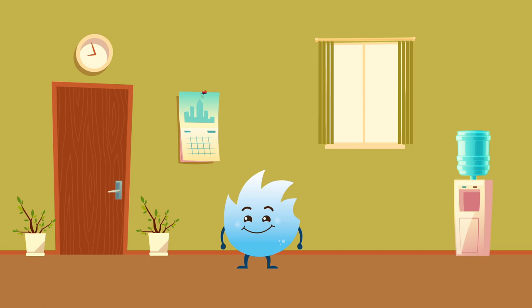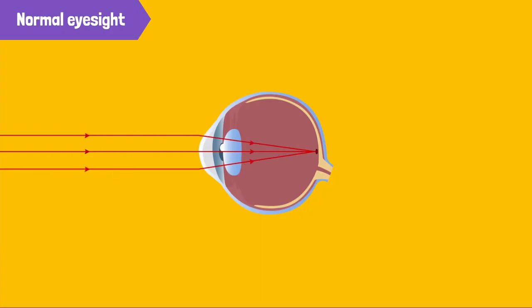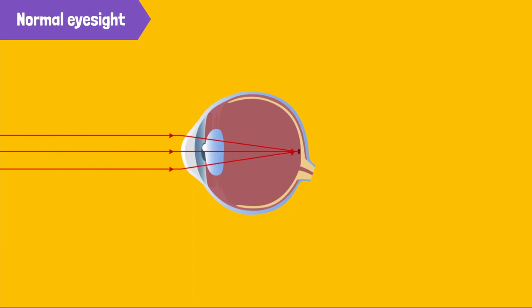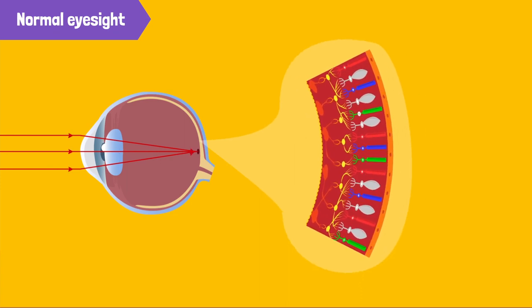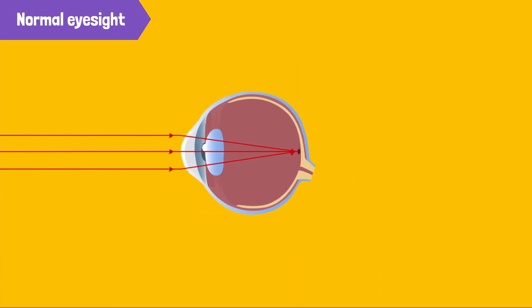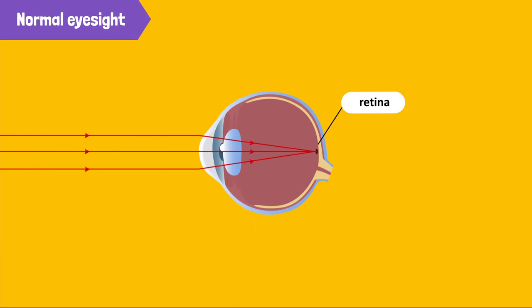So how will your glasses help? For that, I'll have to first explain how the eyes help us form images. Oh, I know that. We can see because images are formed on our retina. Okay. That's right, but it's not just the retina that helps us.